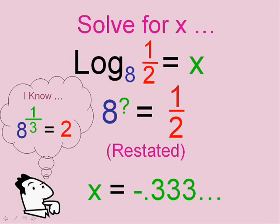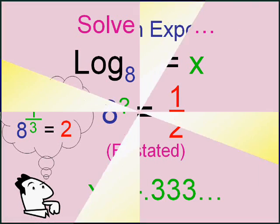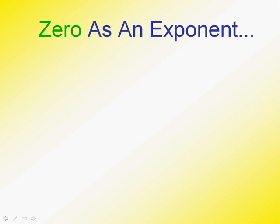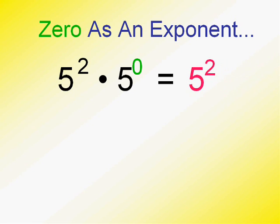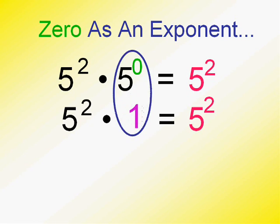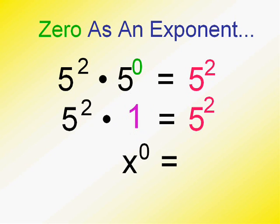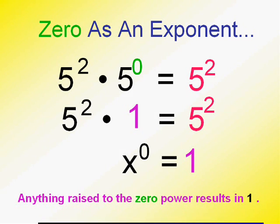Let's look at another rule that hopefully you'll recall about exponents. Remember zero as an exponent? 5 to the second times 5 to the zeroth. We know adding exponents is 5 to the second. 2 plus 0 is 2. Which means, what does 5 to the zero have to be if we multiply 5 to the second by it and get 5 to the second? This expression has got to equal 1, doesn't it? In fact, any number to the zero power is going to result in 1.